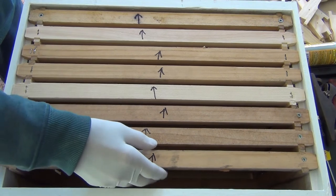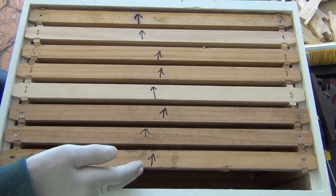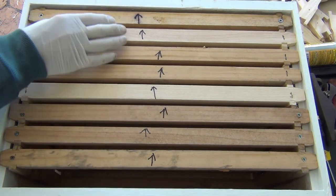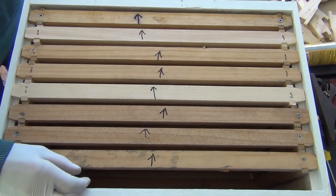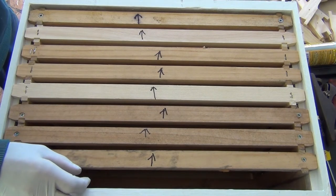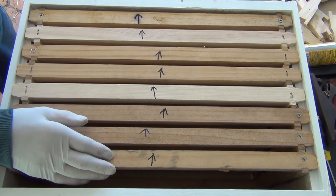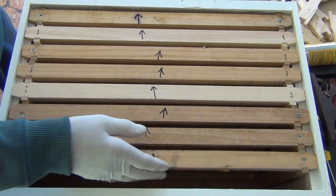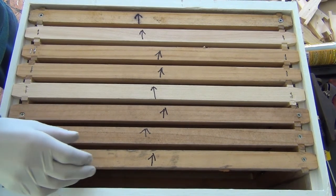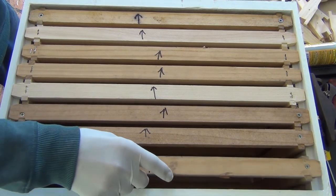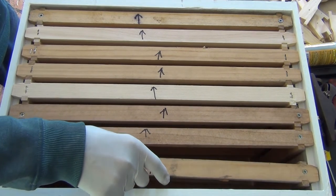In a brood box it is very important that all the frames are pushed up and you have the correct bee spaces. You will have a void at this end and the bees will tend to make this outside comb fatter, but it doesn't matter because you have space to lift it in and out.